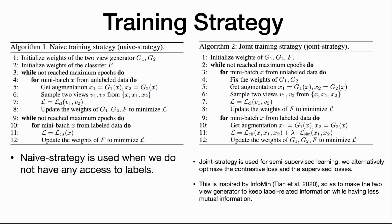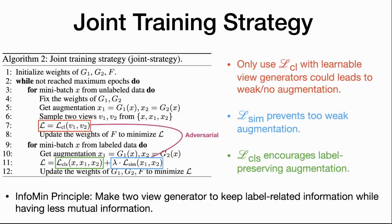We have two different training strategies for different tasks. The naive training strategy is used when we do not have access to labels, for example in transfer learning and unsupervised learning tasks — essentially a standard contrastive learning pre-training algorithm where you contrastively train your encoder and view generators, then fine-tune with supervision. For semi-supervised learning, we propose a joint training strategy with much better performance, inspired by the info-min principle, making two view generators keep label-related information while having less mutual information.